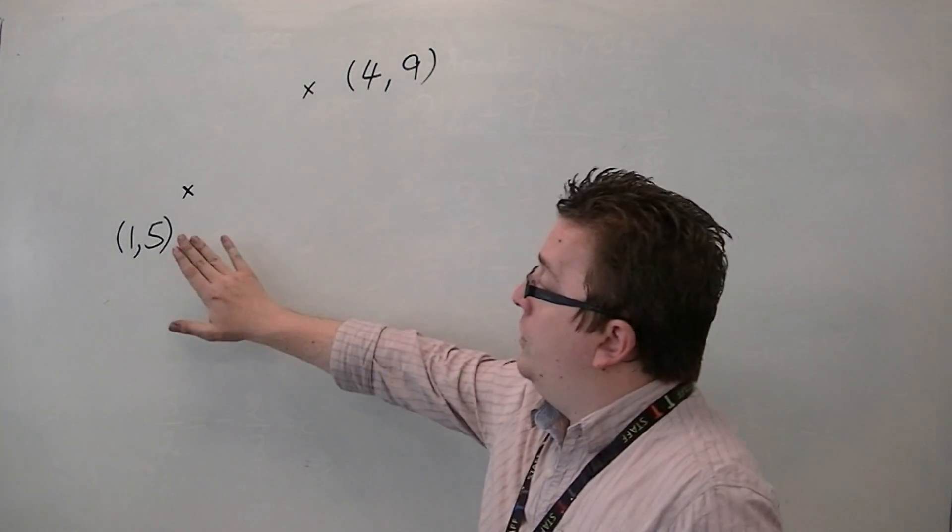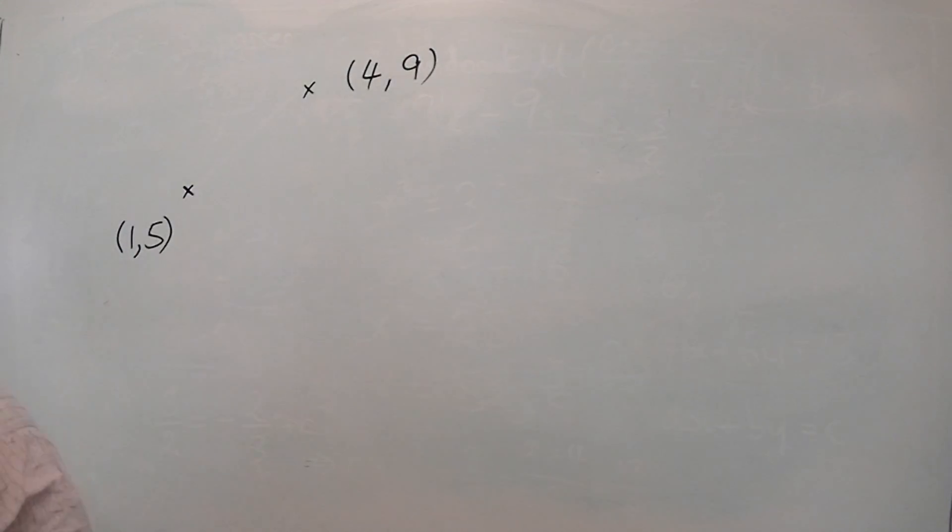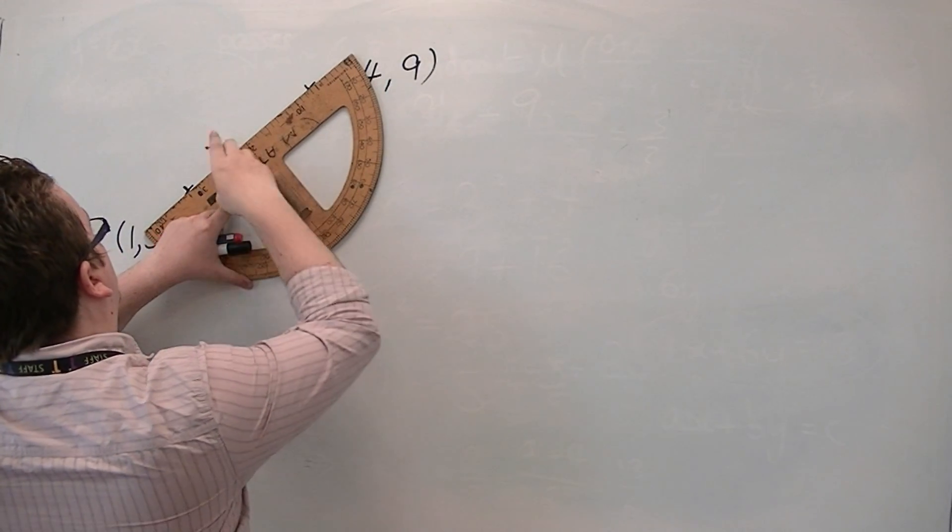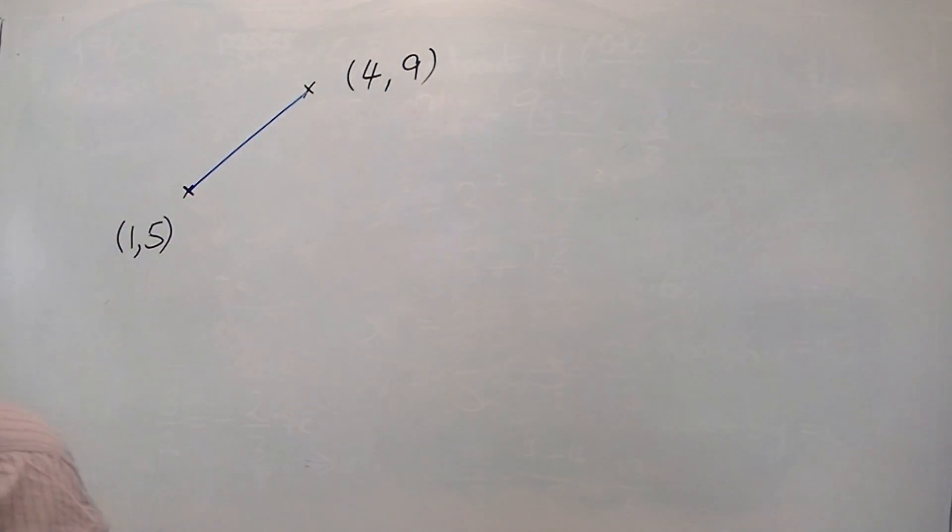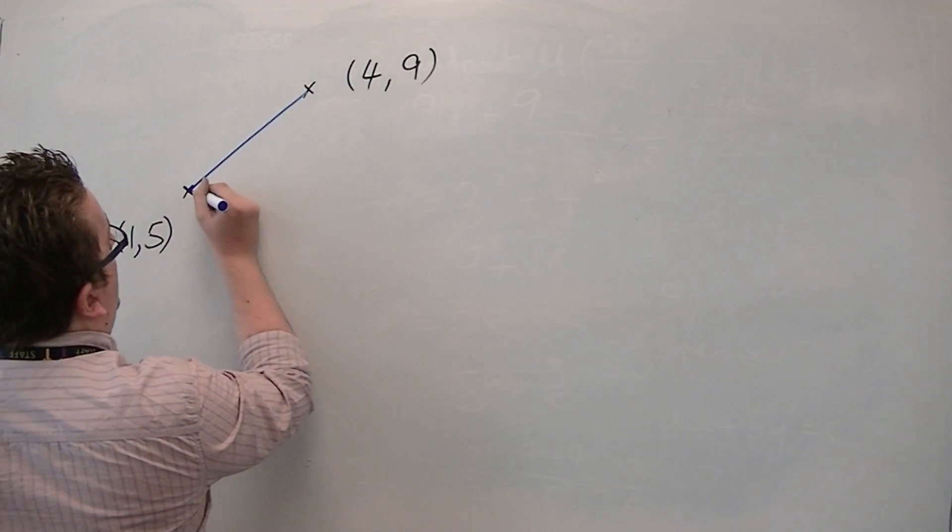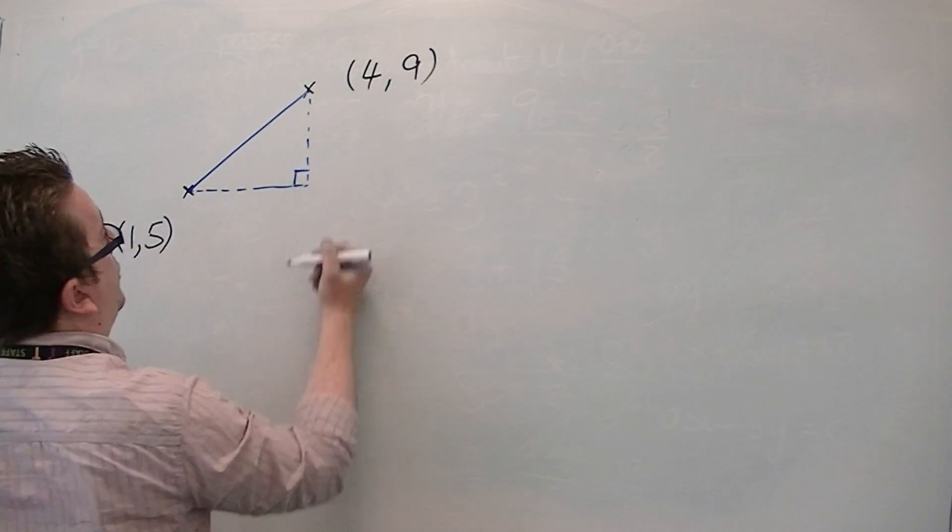So, if you're going to find the distance between two coordinates, it is effectively asking you to find the length of the line joining those two points. So if we draw that line, then if we're being asked to find the length of that line, we know how to find the length of the line using Pythagoras' theorem.